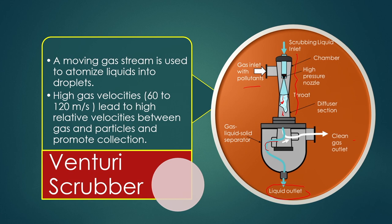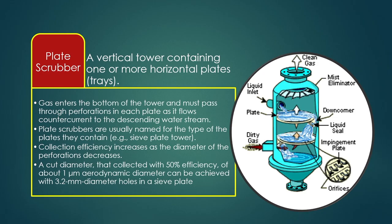The main mechanism of the venturi scrubber is that the moving gas stream is used to atomize liquids into droplets, and high gas velocities around 60 to 120 meters per second lead to high relative velocities between gas and particles, promoting collection.